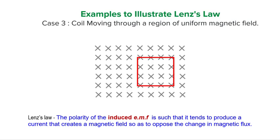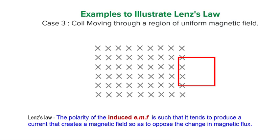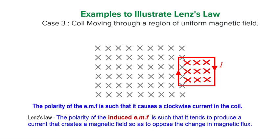Let's consider the last case where the coil is moving out of the magnetic field. At the point when it is moving out, you can see that the magnetic flux linkage through the coil is decreasing. Hence, by Lenz's Law, the induced EMF will produce a current to oppose this decrease in flux linkage. Therefore, the magnetic flux density produced by the induced current will be in the same direction as that of the external field. By the right-hand grip rule, the induced current will be in a clockwise direction. We say that the polarity of the EMF is such that it causes a clockwise induced current in the coil.